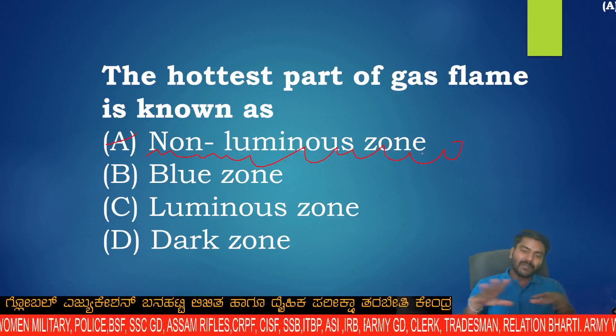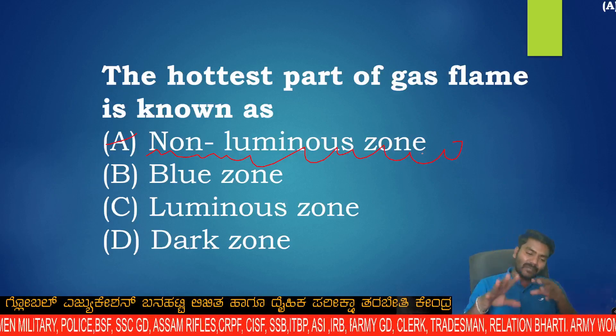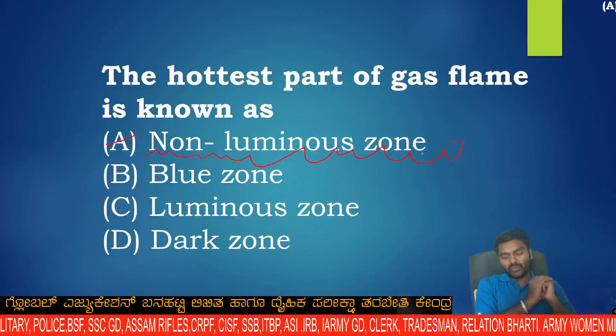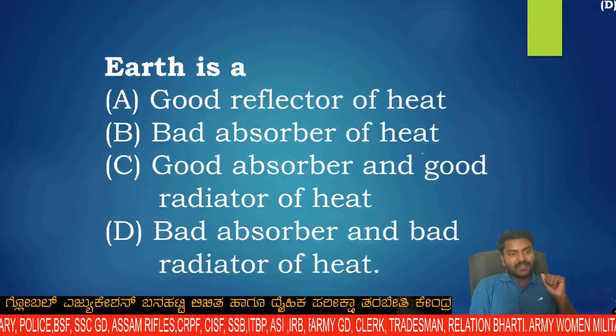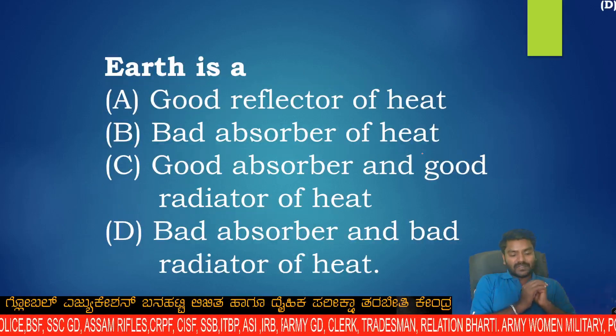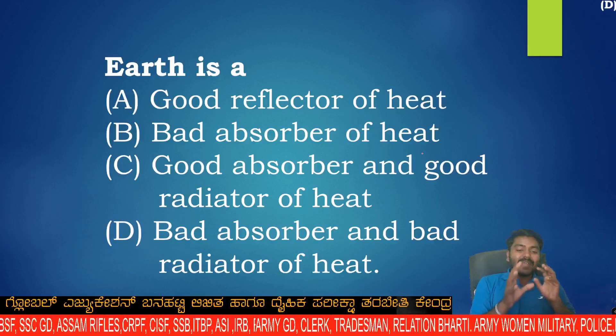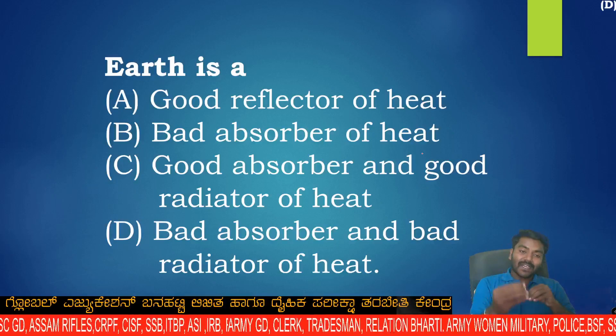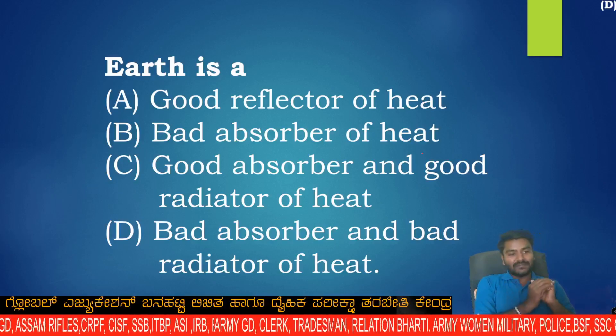The hottest part of the gas flame is known as the non-luminous zone. Earth is a bad absorber and bad radiator of heat.